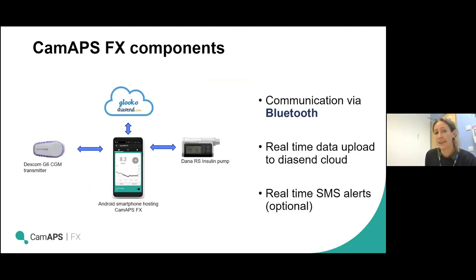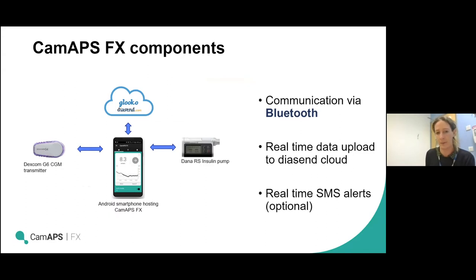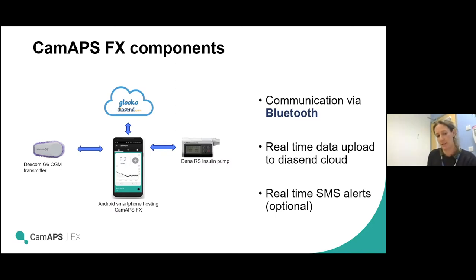The specific components of the CAM APS FX closed loop system: the glucose sensor is called a Dexcom G6 continuous glucose monitor or CGM — about an inch and a half long, worn flat against the skin, normally on the tummy or upper arm. The Dana RS insulin pump has a piece of plastic tubing connecting to the child's body. The control algorithm is found as an app on a standard Android smartphone — you can see the green bubble icon — that takes you into the CAM APS FX app.